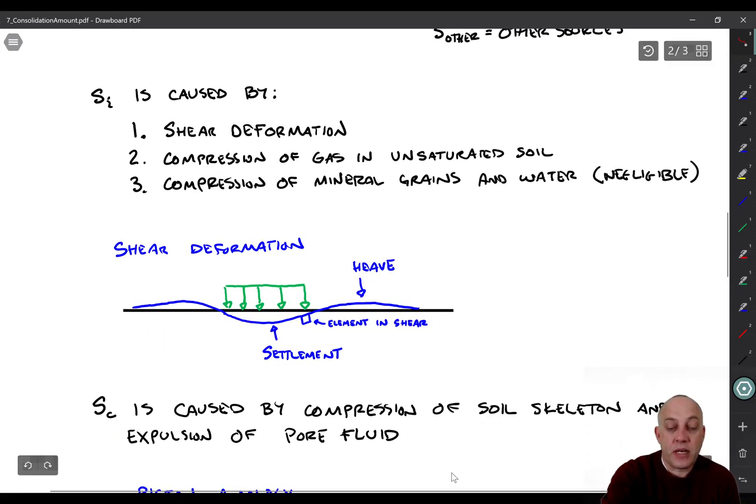Okay, the immediate settlement is caused by three things. One is shear deformation, so that one might seem to be a little bit counterintuitive at first because we usually think of settlement as being related to volume change, but let's say, for example, you have like a thick piece of soft rubber. Rubber is almost incompressible because its shear modulus is really low compared to its bulk modulus, and if you were to push your finger on top of the piece of rubber, your finger would move down, but that's not because the volume of the rubber is changing, it's just because the rubber is deforming, and so when you push down, there's heave in other parts of the surface of the piece of rubber.